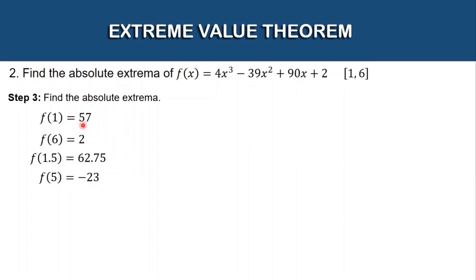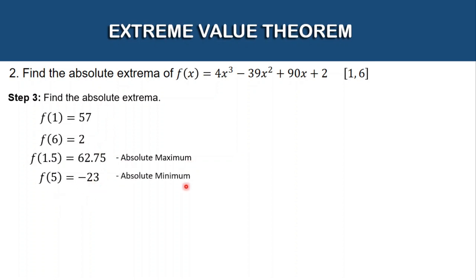The highest among the four is 62.75, so this is the absolute maximum. And the lowest is −23, so this is the absolute minimum.